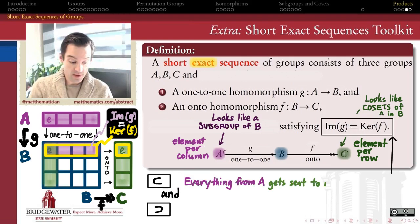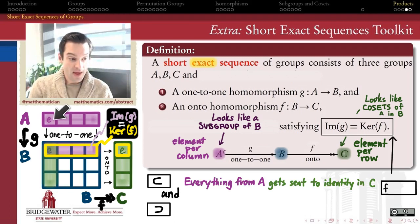If we unpack both of those statements, it means, first of all, that everything which came from A via this one-to-one homomorphism will get sent to the identity in C.